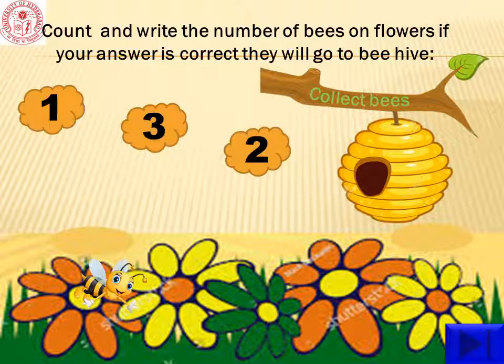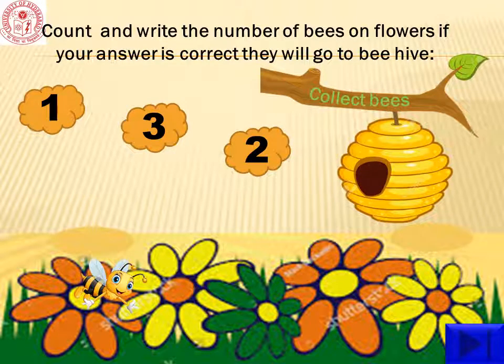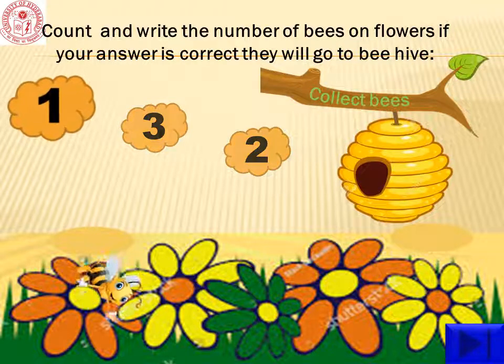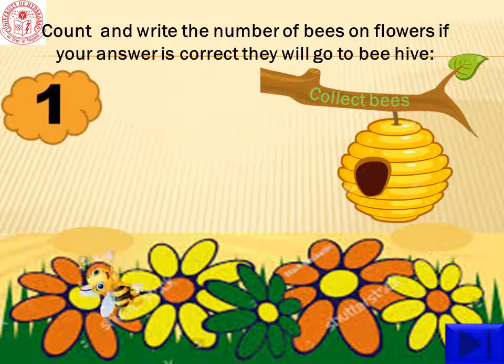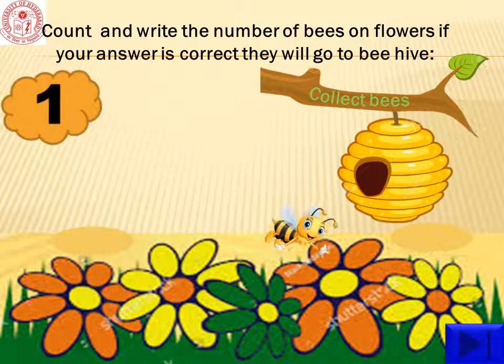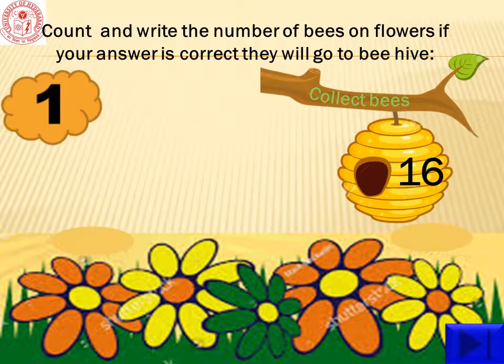Now, let us find how many bees are there on the flowers. One. Yes, only one bee is there. So, click on number one. See, it is going to the beehive.